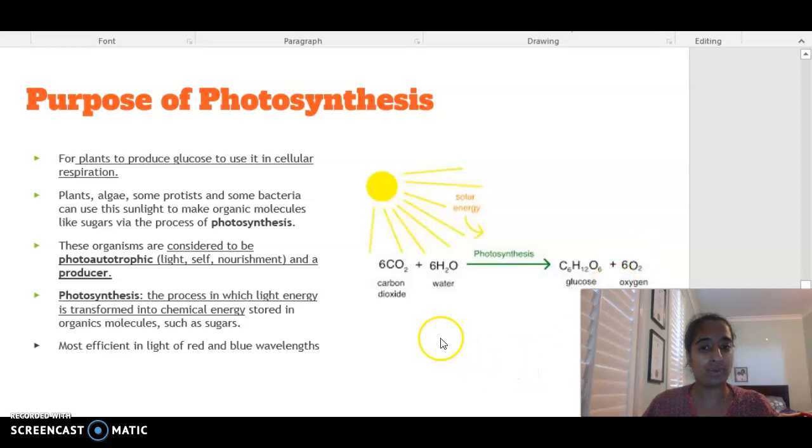You may also be familiar with a variation of this formula, which is 12H2O on this side and 6H2O on this side. So there is water that is input and output. But because there is more water input, it can be simplified to 6H2O on the left. So things that undergo photosynthesis, we have plants, algae, some protists and some bacteria, which are using sunlight to make those organic sugar molecules.